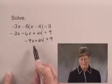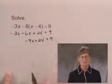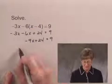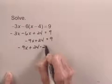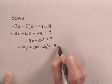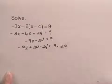I can now get the x term alone on the left-hand side by subtracting 24 on both sides of the equation. So we'd write negative 9x plus 24 minus 24 equals 9 minus 24.